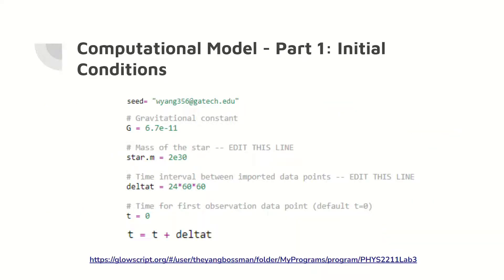For part one in the lab, the initial conditions of the computational model are shown, including the gravitational constant, the mass of the star, and the change in time.